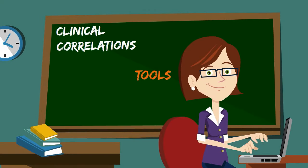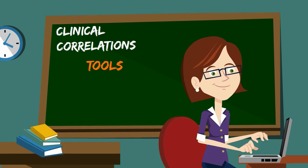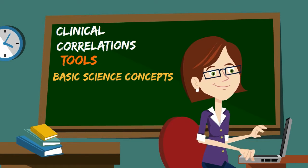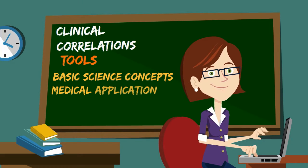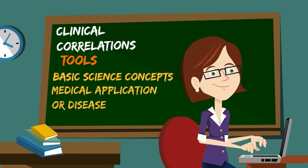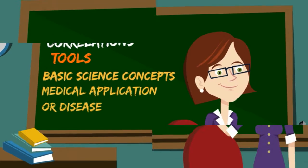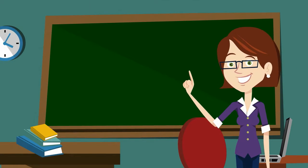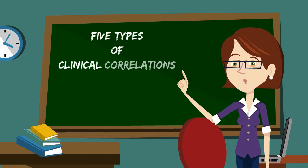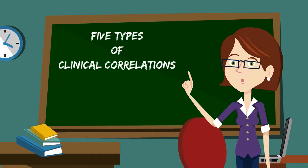Clinical correlations are tools to assist students in associating basic science concepts with a medical application or disease. There are many forms of clinical correlations and many ways to use them in the classroom. We have identified and described five types of clinical correlations that may be embedded within basic science courses.